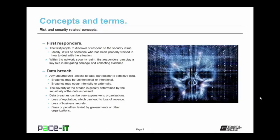The severity of the breach is greatly determined by the sensitivity and quantity of the data that's been accessed. Data breaches can be very expensive to organizations. They can result in a loss of reputation, which can lead to a loss of revenue. When it became known that Target lost sensitive customer information — credit card information — people became unwilling or uncomfortable with shopping at Target. Even though they quickly fixed the breach, the results lingered on. A data breach may result in a loss of business secrets, which may cost that organization a competitive advantage. Data breaches may also result in fines or penalties levied by governments or other organizations.